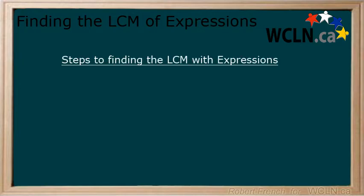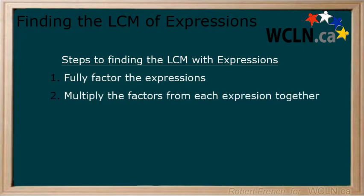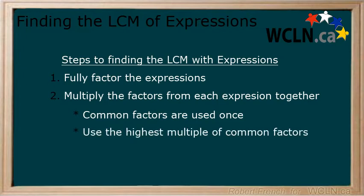To find the lowest common multiple of several expressions, there are two key steps. First, fully factor each expression. Second, multiply the factors from each expression together. In the second step, common factors are used only once and use only the highest multiple of common factors. This means that if you have an x in one expression and an x-squared in another, you use the x-squared for your lowest common multiple — just like if you had the numbers 2 and 4, your lowest common multiple would be 4.